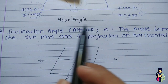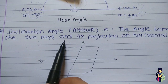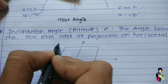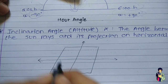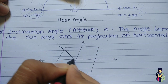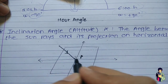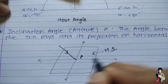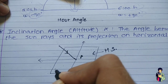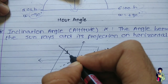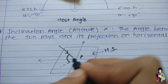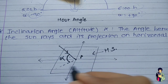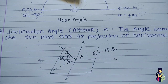What is the inclination angle or altitude? It is the angle between the sun rays and its projection on the horizontal surface. The rays come from the sun to point P, and this is the projection on the horizontal surface. This angle, denoted by alpha, is known as the inclination angle or altitude.